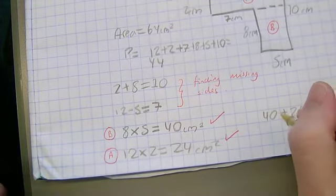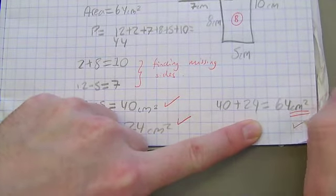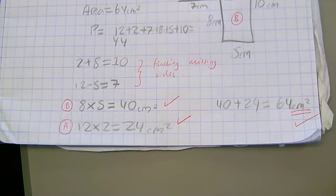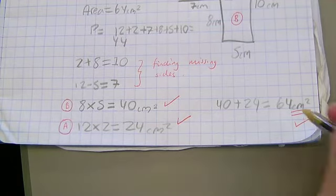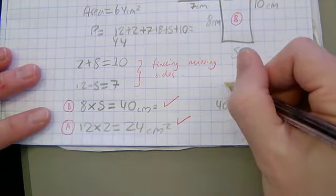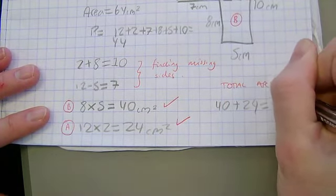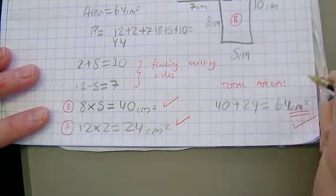And then here, where we've got 40 add 24 equals 64 centimeters squared. First of all, I'm super happy to see the centimeters squared, that tells me he's working area. But what is it? What's he doing here? Why is he doing 40 add 24? What's he finding? He's finding the total area. So literally all I want him to do is write total area. OK? So it's not a lot of extra work here.